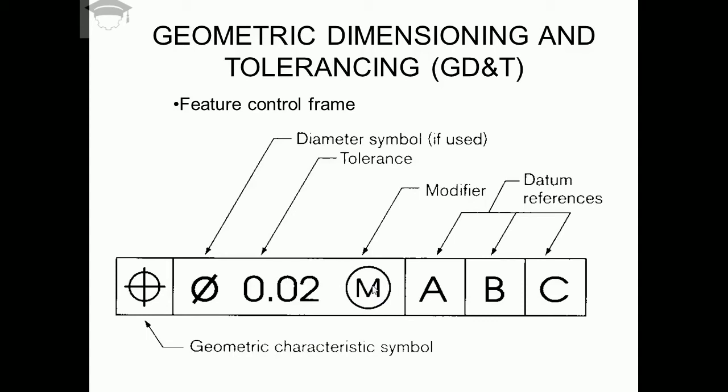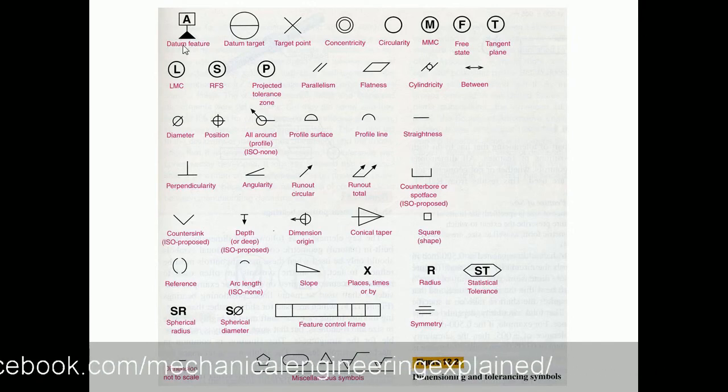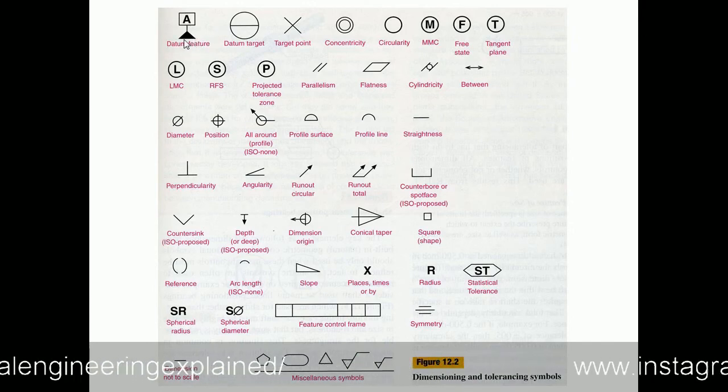A, B, and C are the datum references. Here you can see we mention the datum feature with a black triangle and write an alphabet above it.